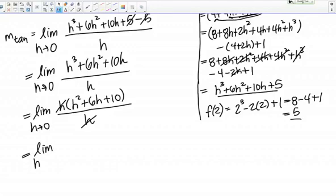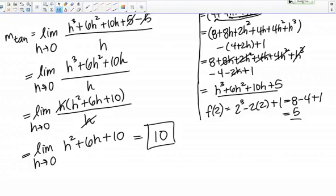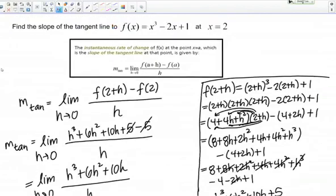And this is equivalent then to the limit as h goes to 0 of h² + 6h + 10. So now I'm left with a continuous function, just a polynomial here, so to evaluate the limit I simply plug in. So if I plug in 0 here to this formula, I'm going to end up with 10. So 10 is my final answer, 10 is the slope of the tangent line at x = 2 to this polynomial.